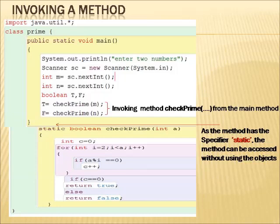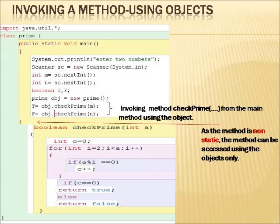The notable thing here is that whenever we use the modifier static, that particular method or variable can be accessed without using the object. And here we are invoking the method using an object. In this example, the method is non-static, so the method can be accessed using the objects. Because of that reason I have created an object for the Prime class, and obj is the object.